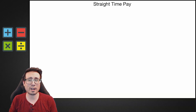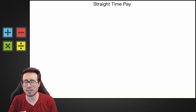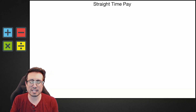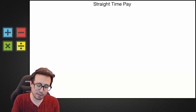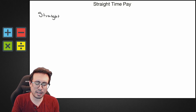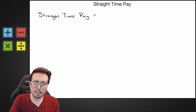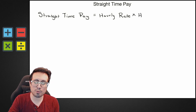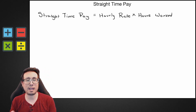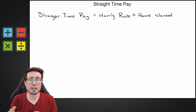We're going to be more concerned with how to calculate straight time pay. Straight time pay has a very specific equation: straight time pay is equal to your hourly rate — how much you make per hour — times the number of hours worked. That is your straight time pay equation.